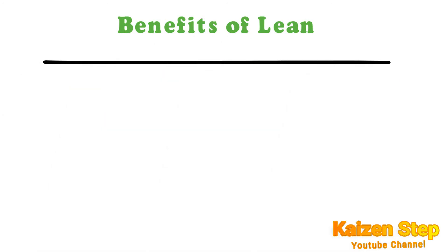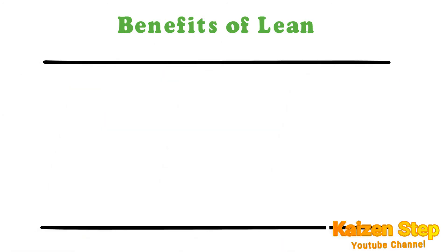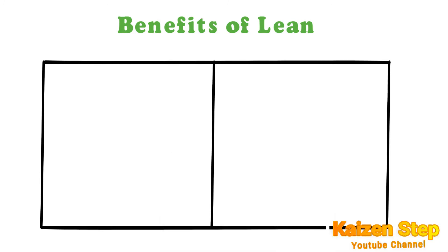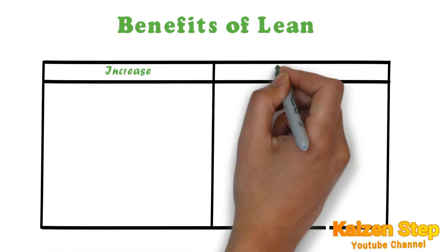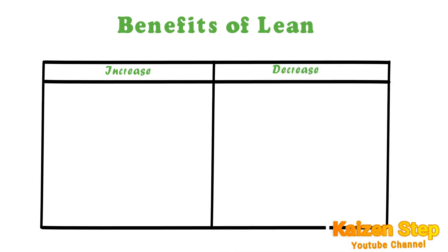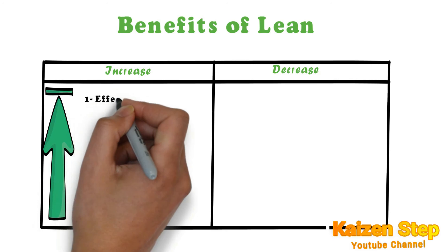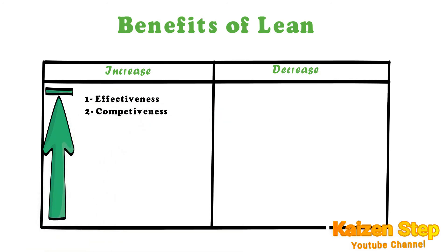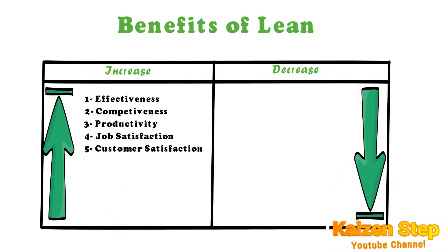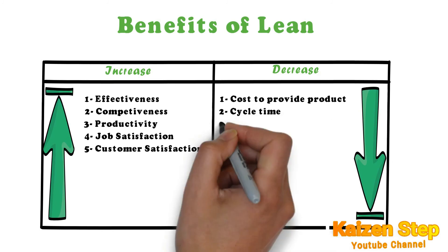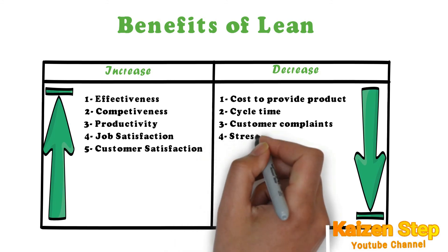Implementing lean in an organization will result in the following benefits: increase in effectiveness, competitiveness, productivity, job satisfaction, and customer satisfaction. There will also be a decrease in cost to provide product, cycle time, customer complaints, and stress for stakeholders.